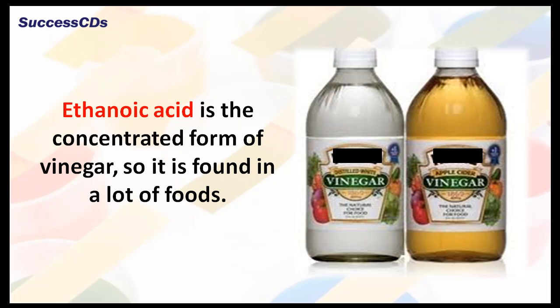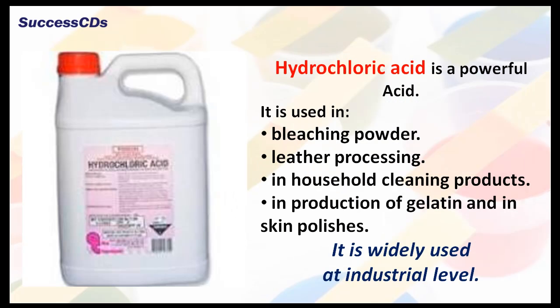Ethenoic acid is the concentrated form of vinegar, so it is found in a lot of foods. Hydrochloric acid is a very powerful acid. It is used in bleaching powder, leather processing, household cleaning products, in the production of gelatin, and also in skin polishes. It is widely used at the industrial level.